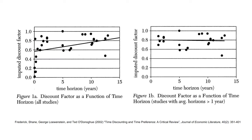The first anomaly is that estimates of the discount factor delta are highly variable. Frederick and friends plotted estimates of delta from a set of published papers. The first figure shows the estimated discount factor increases with the time horizon. If studies with horizons of one year or less are excluded, there is no relationship between the discount factor and the time horizon. This suggests that the discount factor may vary with time.